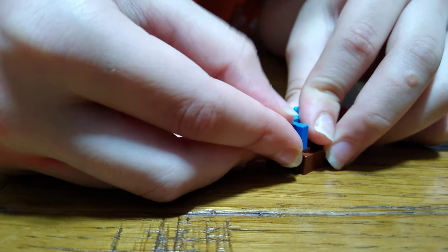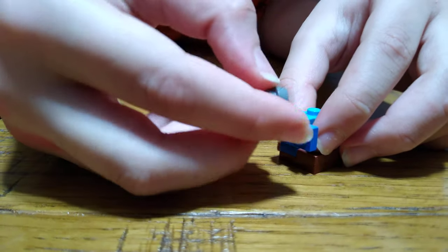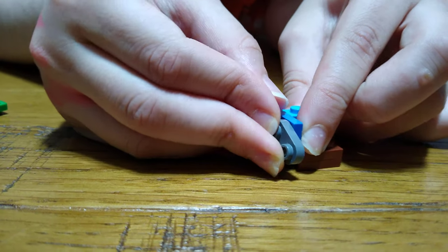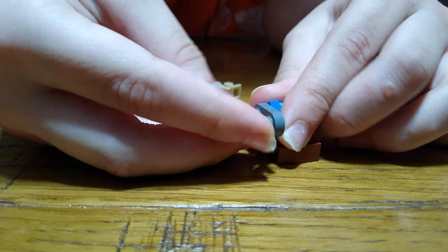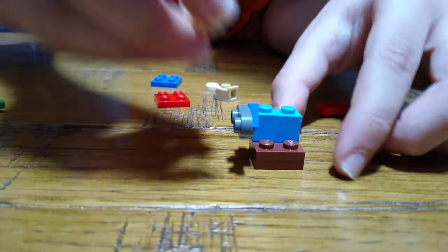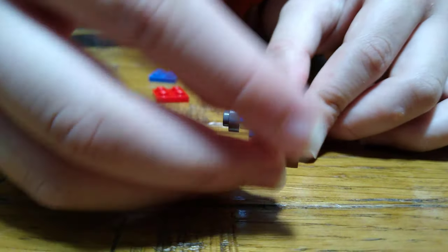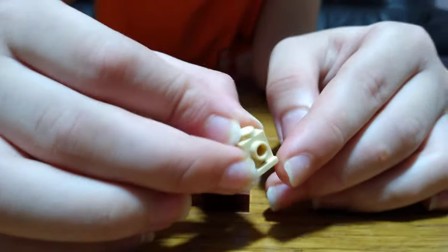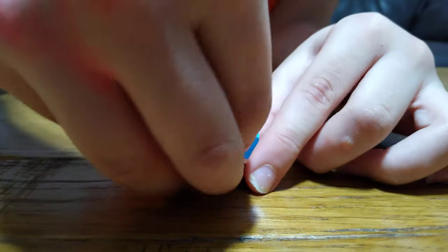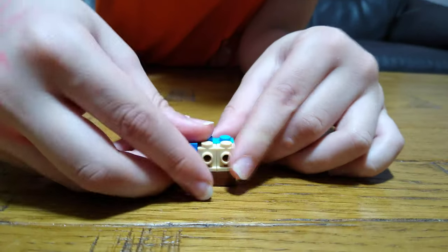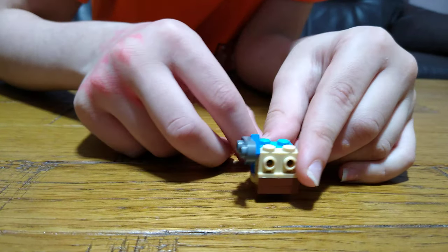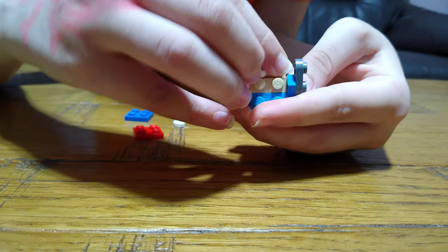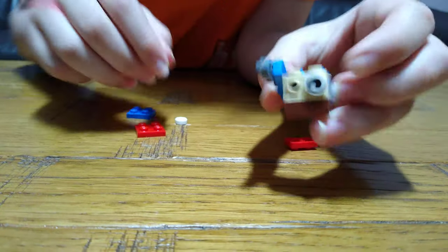Next we're going to get a blue one by two tile and then a gray one by two tile, but the curved version of it, like that. Next we're going to put on two of these modified bricks with a bit of space there, get two of them, put them there. And then just put two eyes. The direction of the eyes is important, like that, and for the other one.